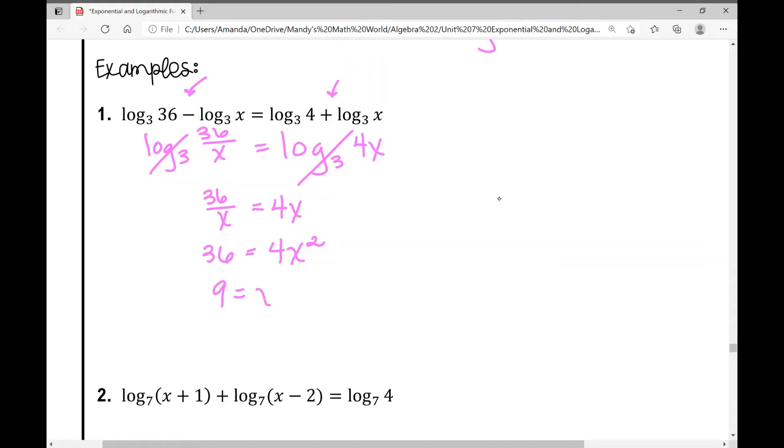So 9 equals x squared. How do you undo that x squared? Take the square root of both sides. When we do that, x could be positive or negative 3. So we have two solutions.